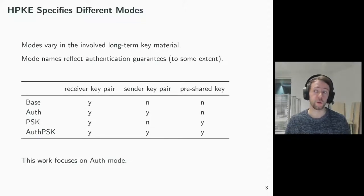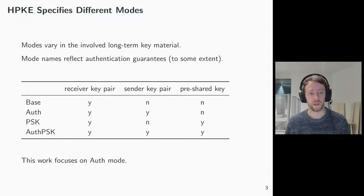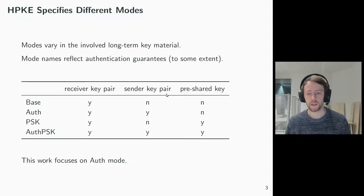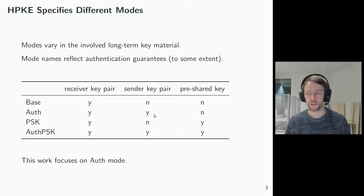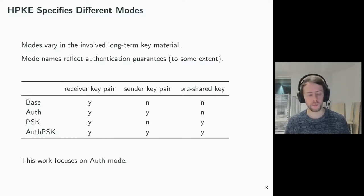Orthogonal to this classification of APIs, HPKE defines four modes. They vary in the involved long-term key material and their names somewhat reflect their authentication guarantees. As long-term key material we have receiver key pairs, sender key pairs and pre-shared keys. HPKE always requires a receiver key pair. In the base mode there is no other key material involved. In the auth mode there is a sender key pair being used for sender authentication. In PSK mode a pre-shared key is used for sender authentication and reinforced confidentiality. Finally in auth PSK both of them are used. In this work we focus on the auth mode.